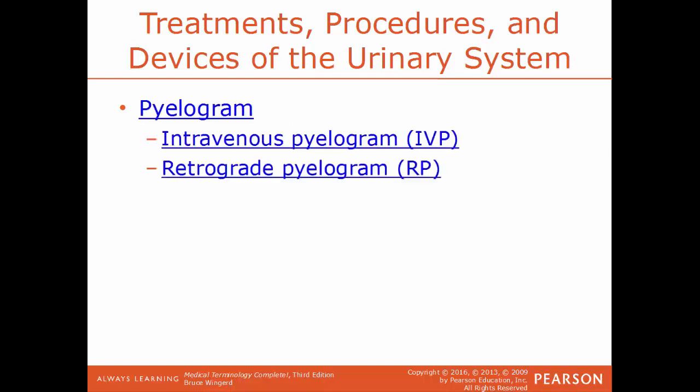Pyelography is an x-ray examination of the urinary tract — specifically radiographs of the renal pelvis and the ureter. An example is an IVP, intravenous pyelogram, which can show all of the urinary tract: the kidneys, ureters, and bladder — a good diagnostic tool to visualize the entire tract at once. Another example is an RP, retrograde pyelogram — still a radiologic exam of the tract, but going backwards through the urinary tract. The dye is injected into the ureter and flows upward, in the opposite direction that urine normally travels — that's why it's called retrograde.